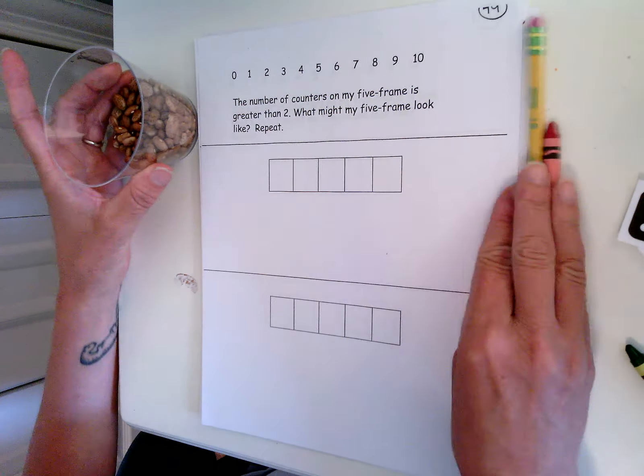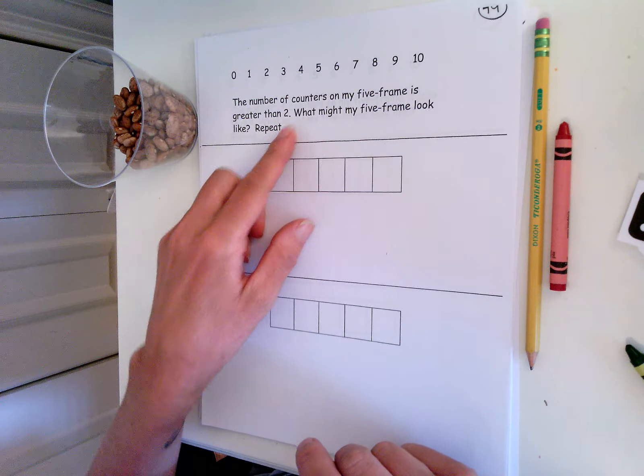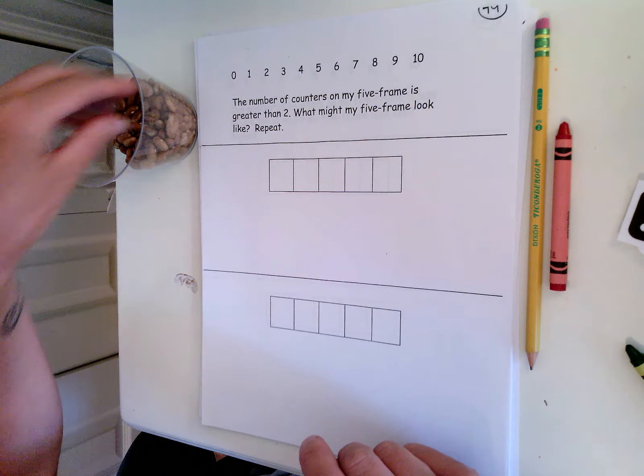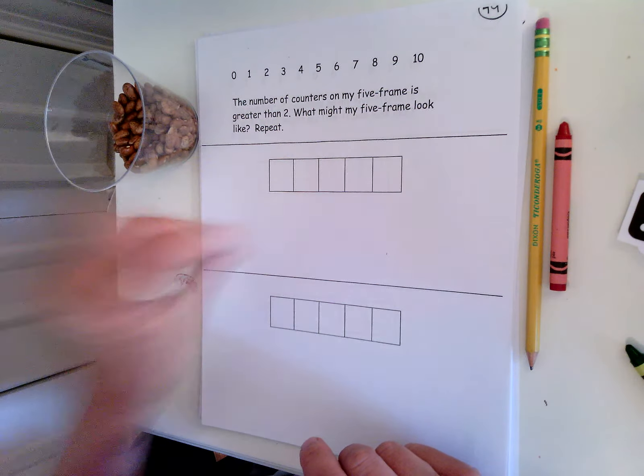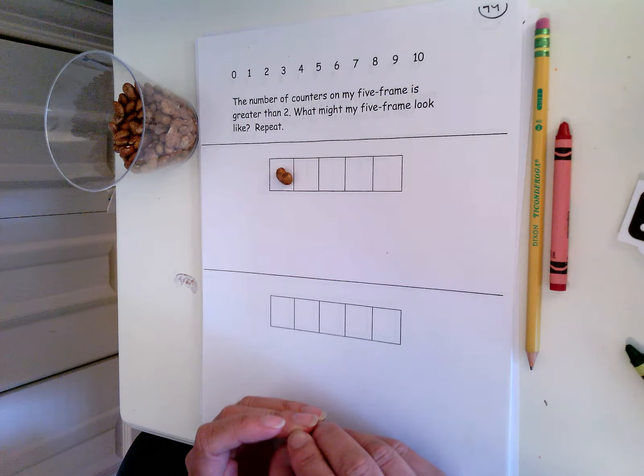Okay, so the number on my five-frame is greater than two. So that means more than two. Do I have more than one counter on my five-frame? No, so that won't work.